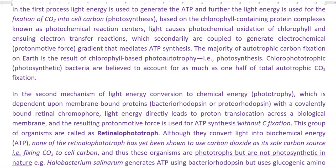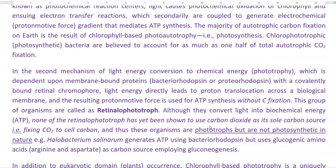This occurs without carbon fixation. Because of the presence of these particular pigments, mainly bacteriorhodopsin, that are similar to the retinal pigments present in higher organisms, these organisms are referred to as retinal phototrophic organisms, that is, retinal pigment-containing phototrophic organisms. They convert light into biochemical energy, that is, ATP. None of the retinal phototrophic organisms has yet been shown to use carbon dioxide as a sole source of carbon; they are unable to fix carbon dioxide into cell carbon.